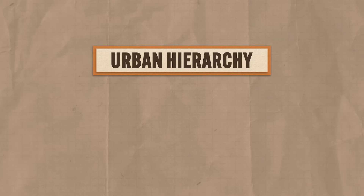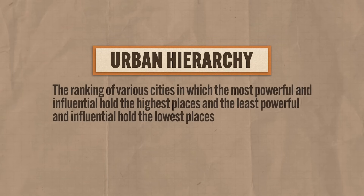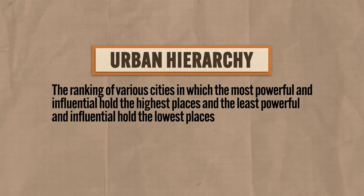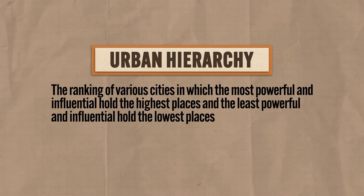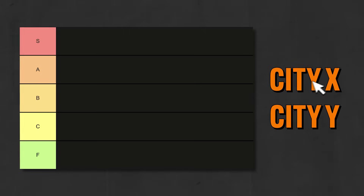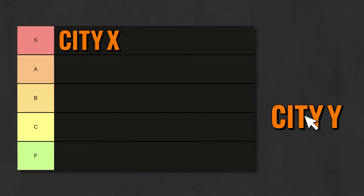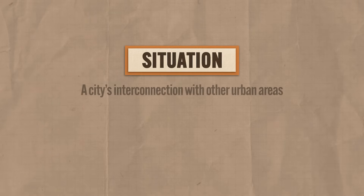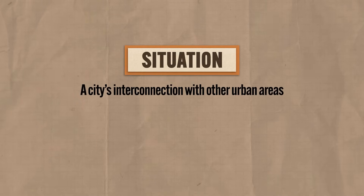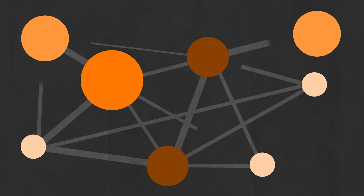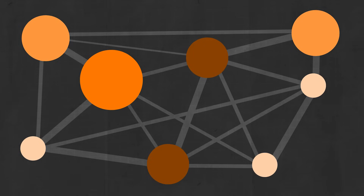The first concept is urban hierarchy, which refers to the ranking of various cities — the most powerful and influential holding the highest places and the least powerful and influential holding the lowest places. The second concept is a city's situation, which refers to its interconnection with other urban areas. Cities in any given place are not islands unto themselves, but have a series of linkages between each other that creates relationships among them.